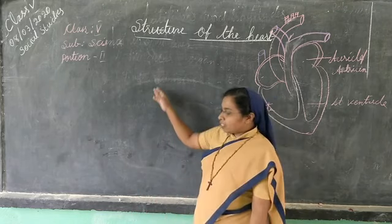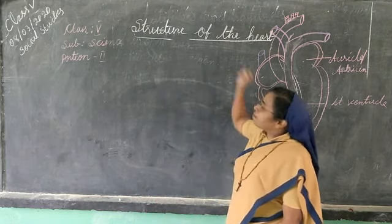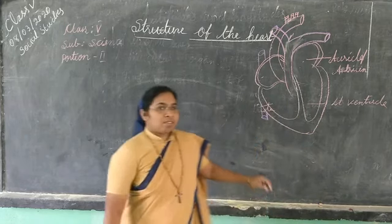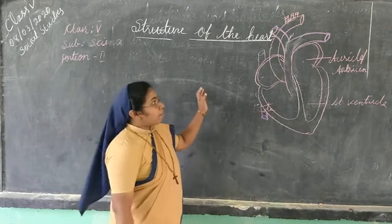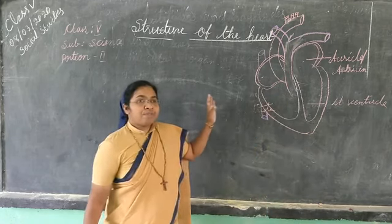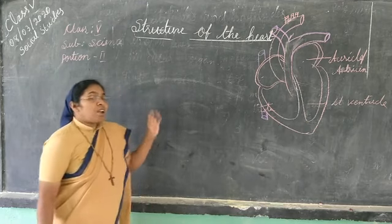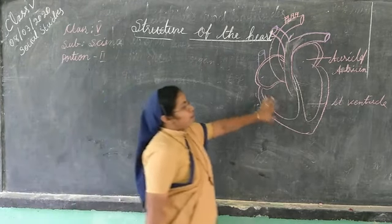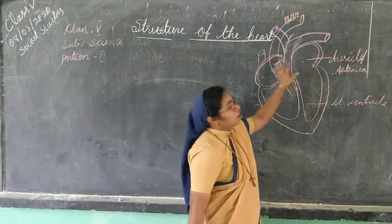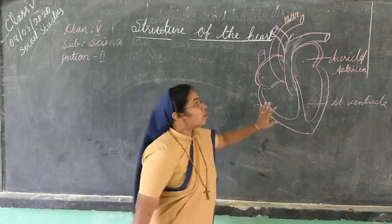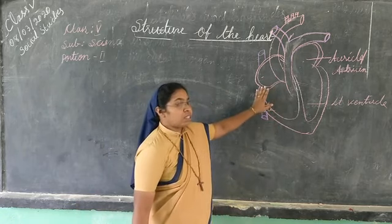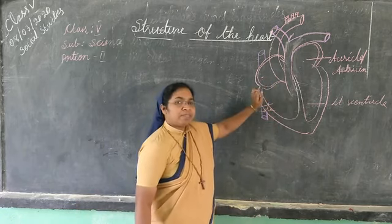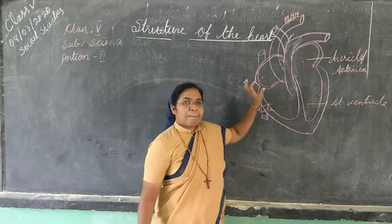Now we will discuss about the structure of the heart. Heart is made up of a muscular organ. This heart is divided into chambers.